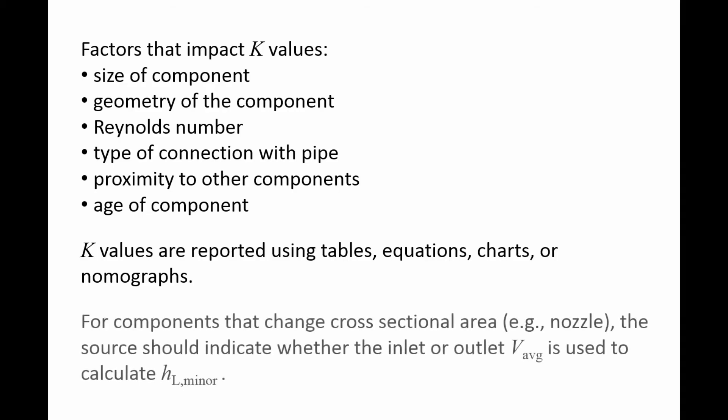For components that change cross-sectional area, the flow speed at the inlet and outlet will be different. For these components, the source that provides the K value should indicate whether you should use the inlet or outlet flow speed in calculating h_L,minor.